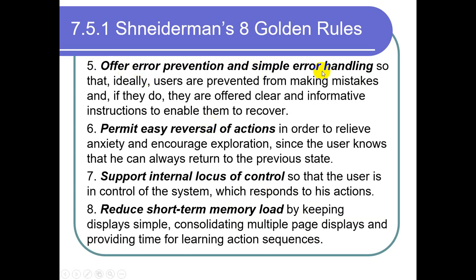Rule 5: Offer error prevention and simple error handling. Our users can make mistakes and enter invalid data. We must first try to prevent errors by applying validation checks so the user cannot enter wrong or invalid data. But if sometimes an error occurs or an exception appears, we must catch it and handle it. We must provide a proper mechanism so the user can recover from the error situation. The system must not crash down.